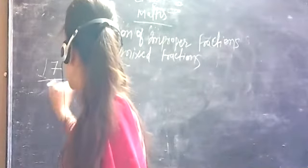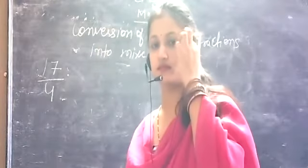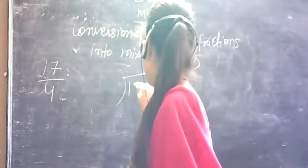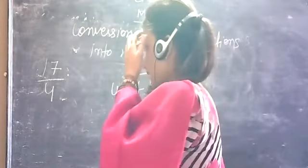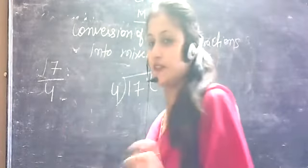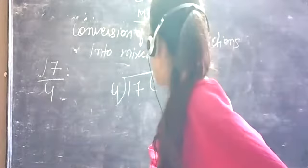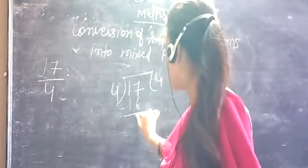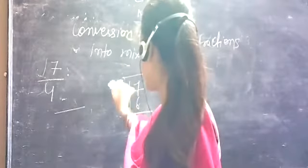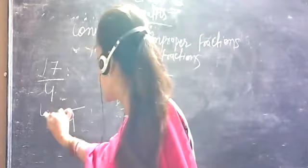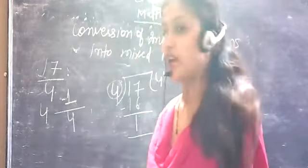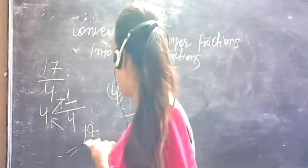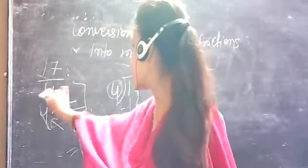Let's see one more example. I have written 17 upon 4. How do you change this? We divide 17 by 4. 4 times 4 is 16, so the quotient is 4 and the remainder is 1. We write the quotient here and the remainder here — this is our mixed fraction. To verify: 4 multiplied by 4 plus 1 equals 17 upon 4, so the mixed fraction is correct.